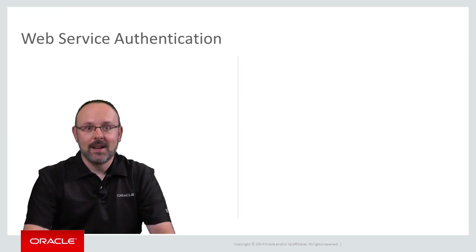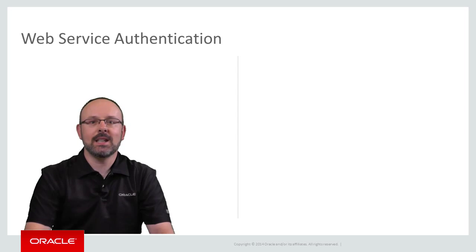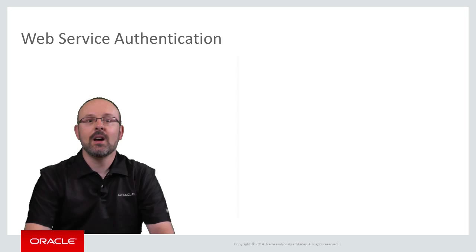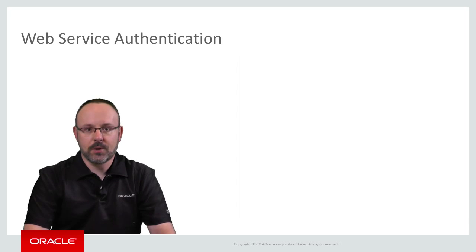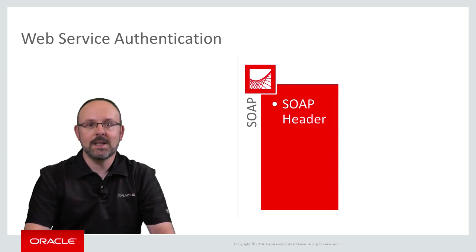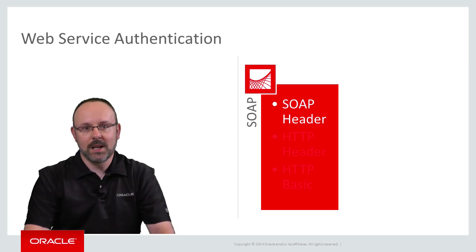In MAF, there is a clear distinction between how the application authenticates and how the credentials are propagated in the context of web service calls. If you are calling SOAP web services, you have three options. Credentials can be passed in the SOAP header. In this case, authentication is performed by the web services stack, and you cannot take advantage of existing SSO infrastructure supporting web applications.